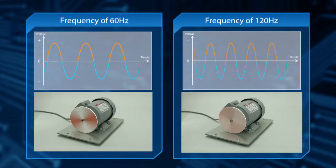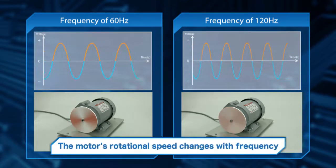When the frequency is 120 hertz, there are 120 waves per second and the motor rotates twice as fast as it does at 60 hertz.